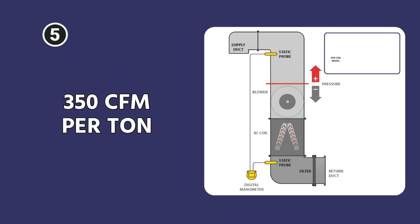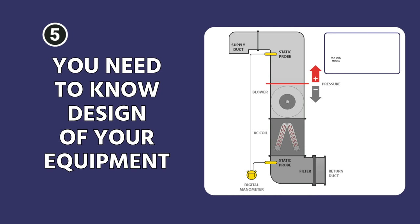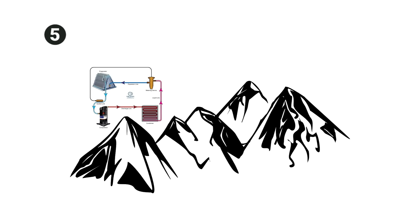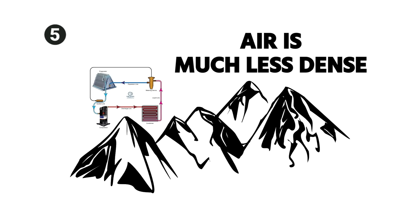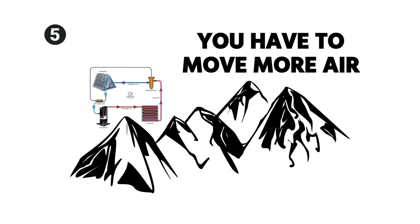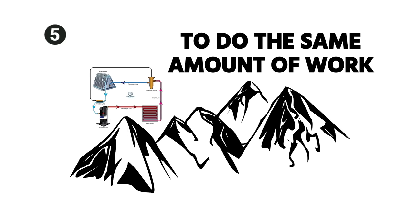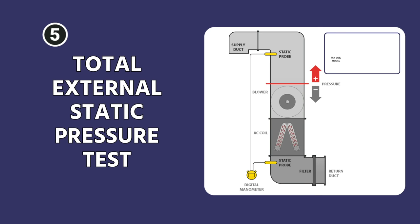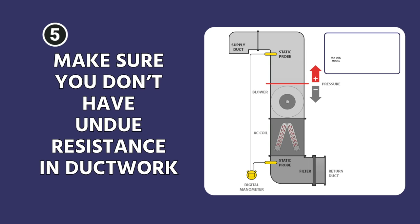People will throw around 350 CFM per ton, or 400 CFM per ton, or 500 CFM per ton, but you need to know the design of your particular piece of equipment to know what target you are trying to hit. For example, if you have a system up in the mountains where the air is much less dense, you have to move more air to do the same amount of work because the air weighs less. Once you've established that, you can do a total external static pressure test on the system to make sure that you don't have undue resistance in your ductwork.